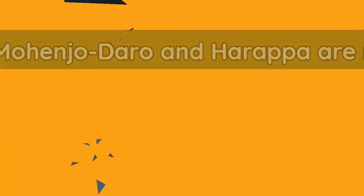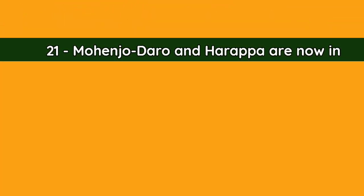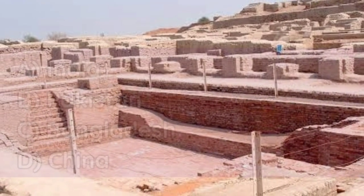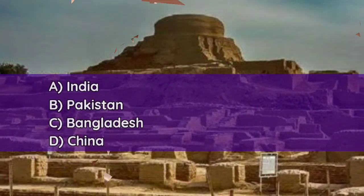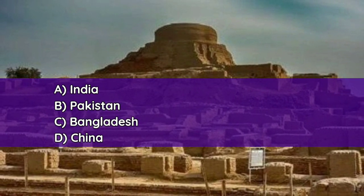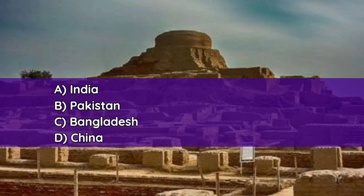Question number twenty-one: Mohenjo-daro and Harappa are now in — A. India, B. Pakistan, C. Bangladesh, D. China. And the correct answer is B — Pakistan.